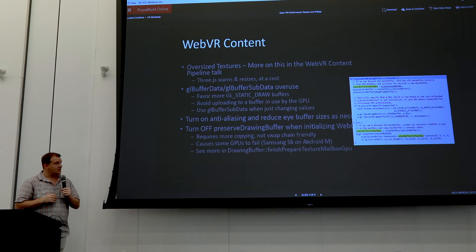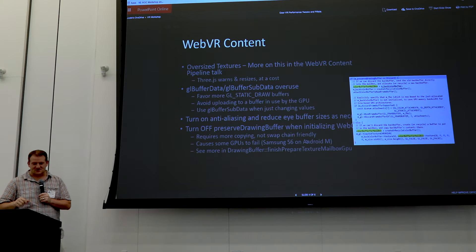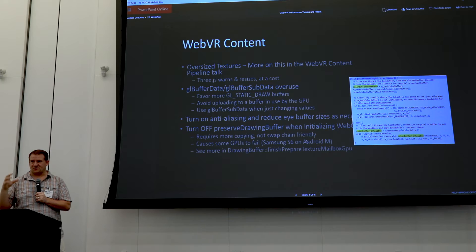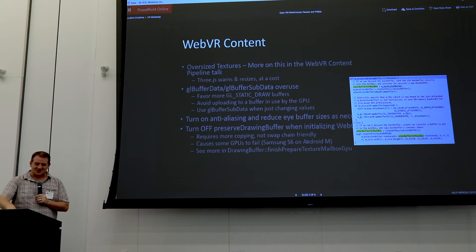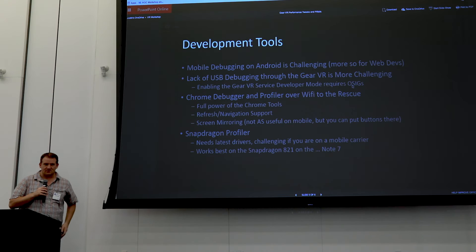Turning on anti-aliasing and reducing the index buffer sizes was a key content-level fix for us. Also, turn off preserve drawing buffer. It's used for mirroring samples where people want to see it in the canvas and also in the display, but on mobile you only have one. There's still a backing surface for the canvas, which requires another texture copy — and it actually causes some GPUs to fail. An S6 on Android M would just draw a black screen.